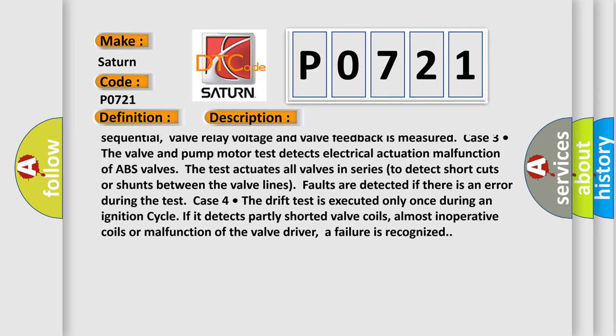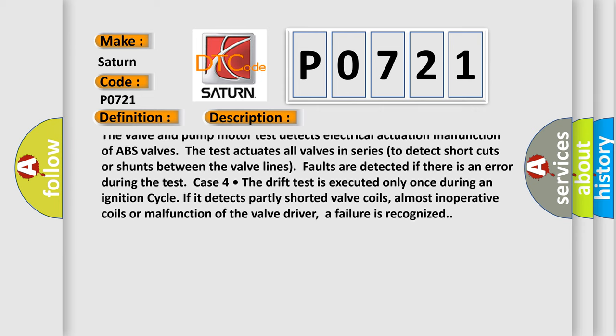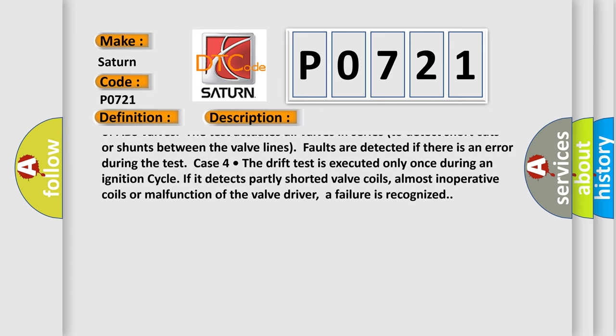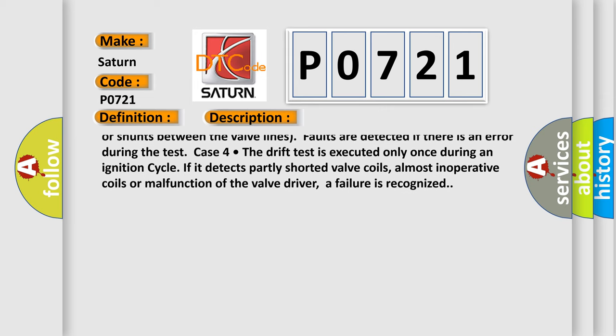The test actuates all valves in series to detect shortcuts or shunts between the valve lines. Faults are detected if there is an error during the test. Case 4: The drift test is executed only once during an ignition cycle.